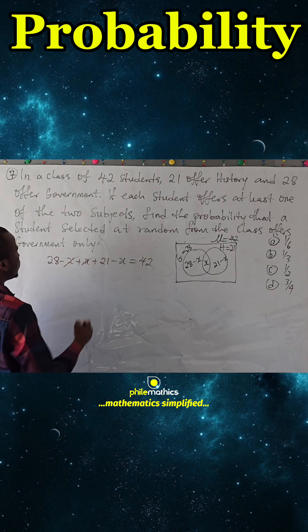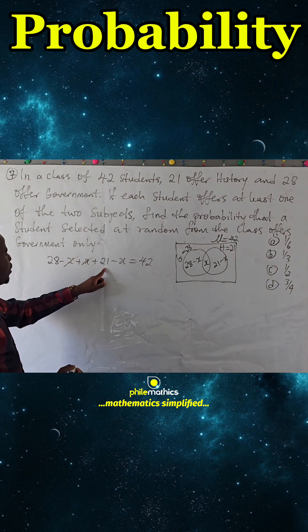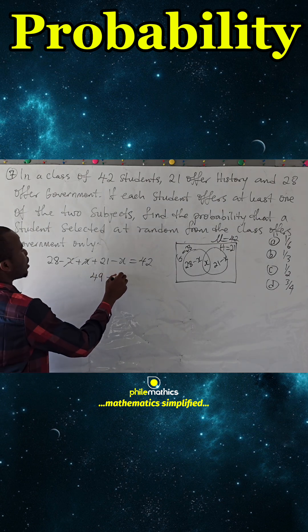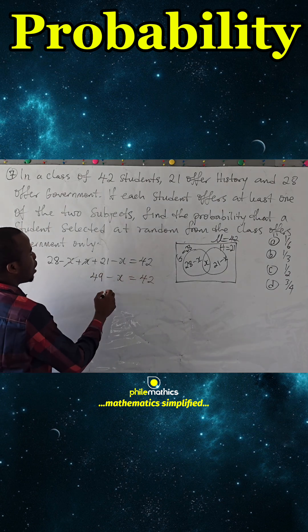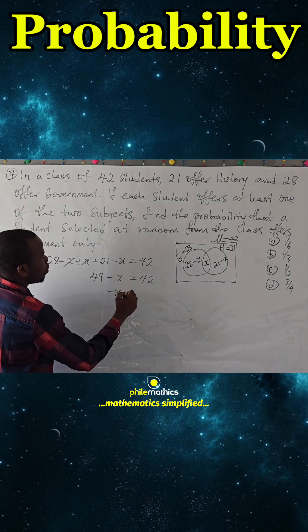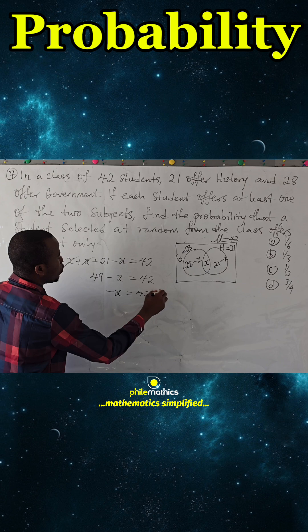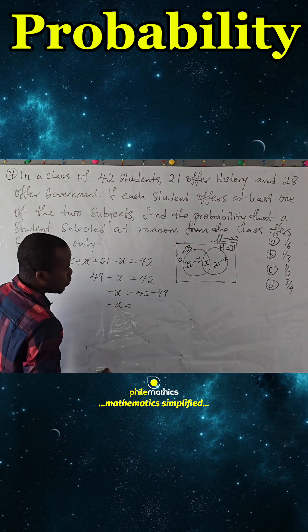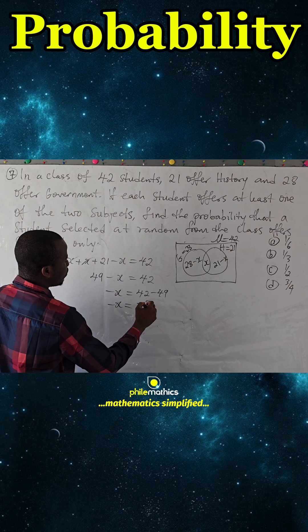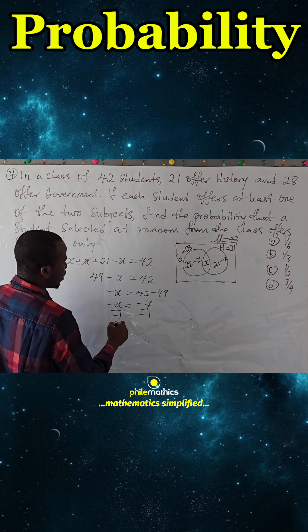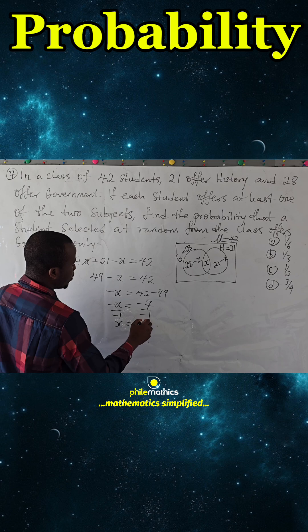This X cancels with this. 28 plus 21 is 49, so we have 49 minus X equals 42. Subtract 49 from both sides. We have minus X equals 42 minus 49. Minus X equals minus 7, so if we divide by minus 1, X is simply 7.